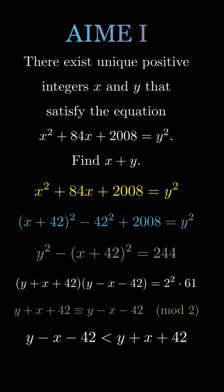Given that y and x are positive integers, y minus x minus 42 is less than y plus x plus 42.